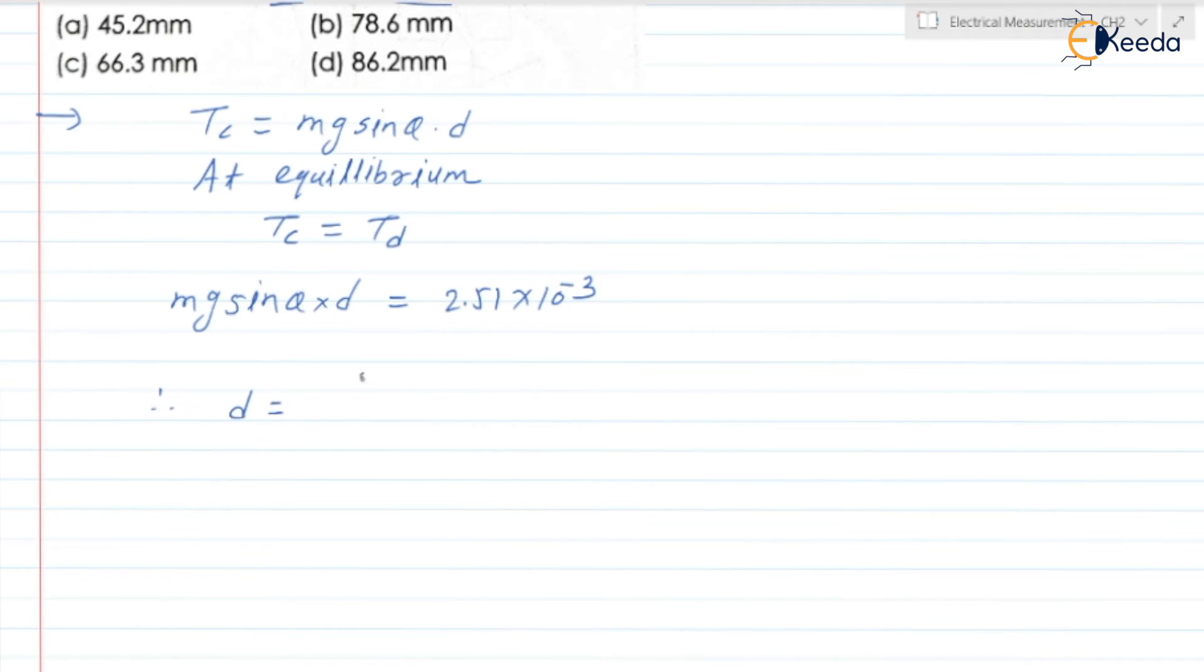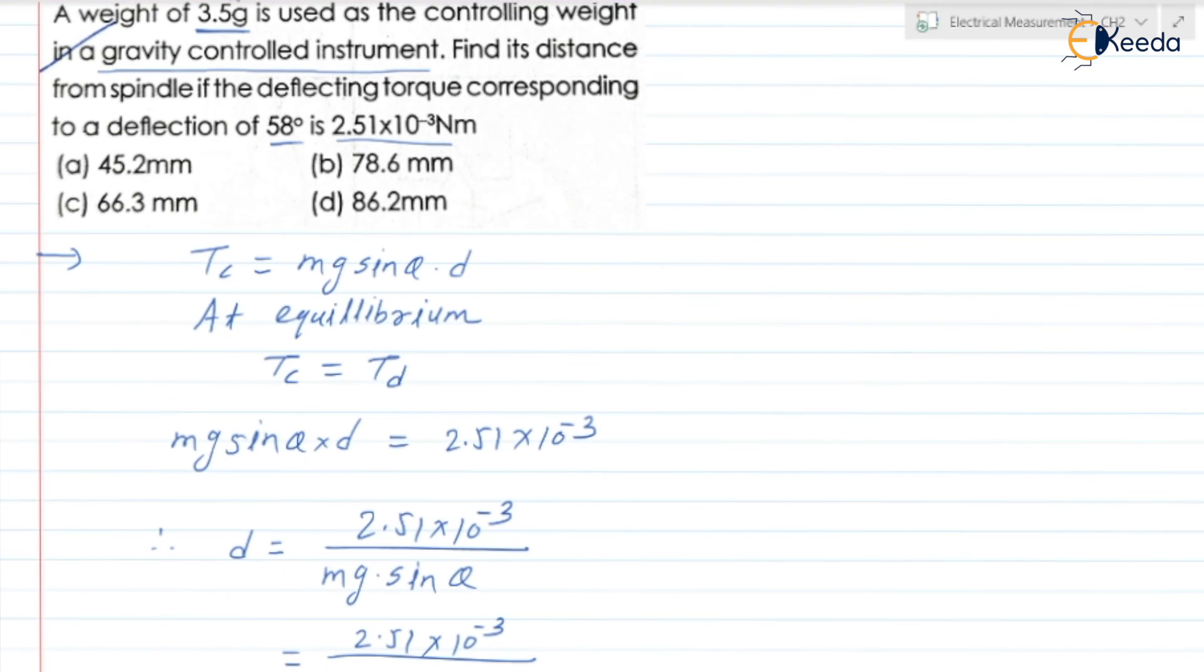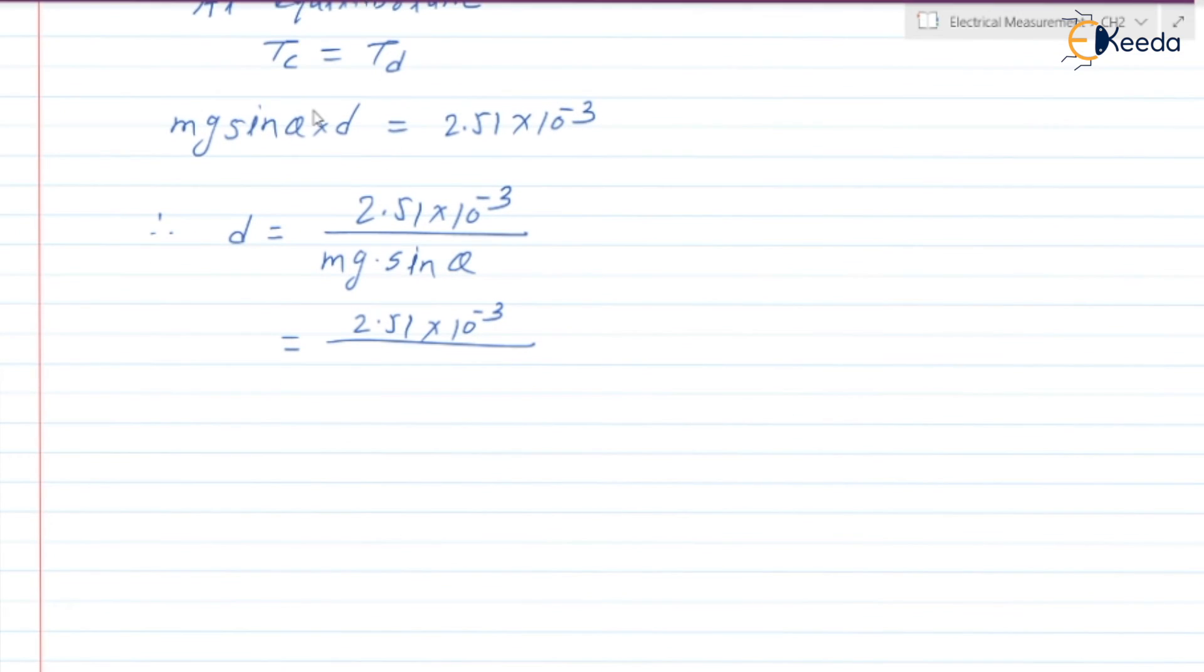d is equal to 2.51×10^-3 divided by m g sin theta, which is equal to 2.51×10^-3 divided by m, the mass. What is the mass? It is 3.5 gram. Can we convert that gram to kilogram? Yes, we can. It is 3.5×10^-3.